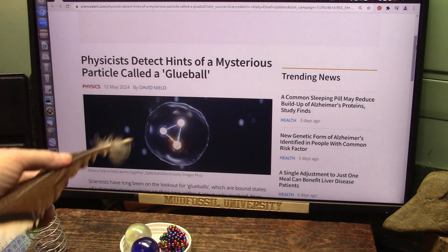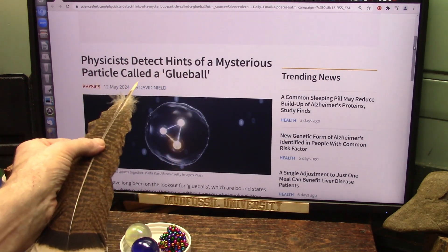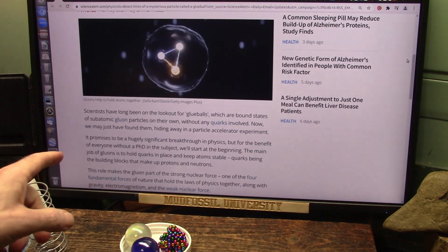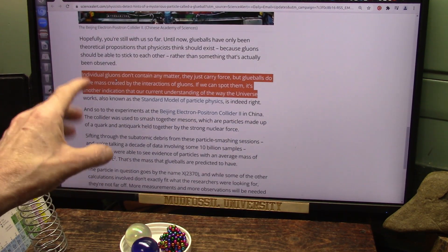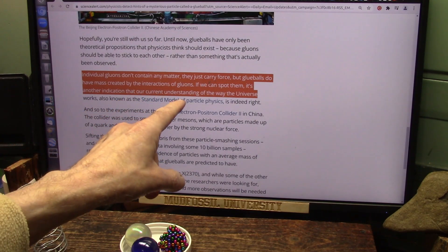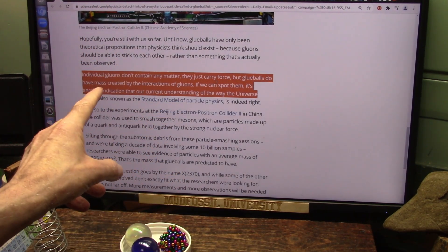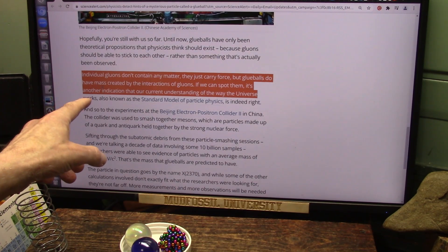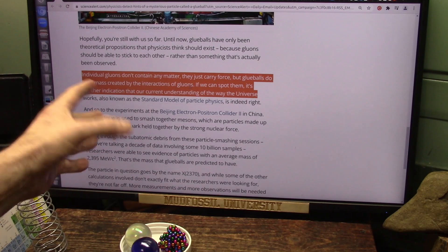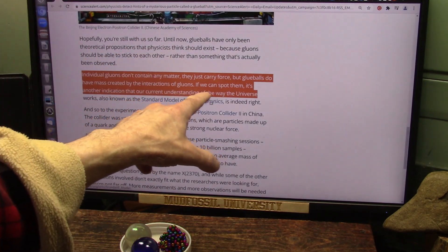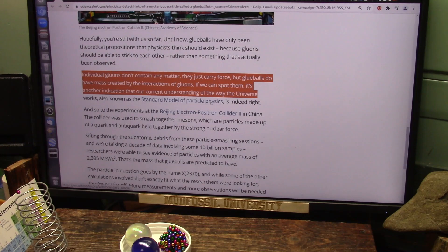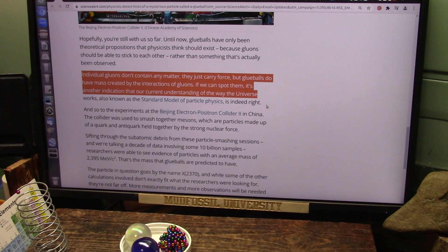This is more nonsense from the physics mainstream. Physicists detect hints of a mysterious particle called a glue ball. And they're supposed to bind subatomic gluon particles. They say individual gluons don't contain any matter. That is incorrect. They just carry force. They do carry force. They carry matter. Glue balls, which don't exist, do have mass created by the interactions of gluons. Well, if the gluons don't have any mass, how come the interactions ends up with having mass? It's just crazy. The standard model does not work whatsoever. It's totally wrong.